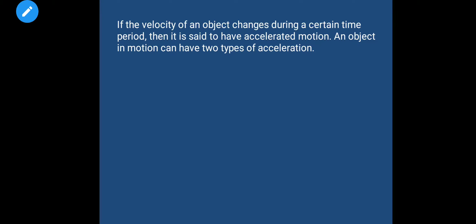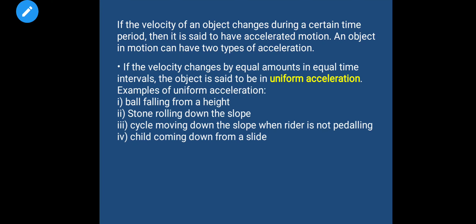If the velocity of an object changes during a certain time period, it is said to have accelerated motion. An object in motion can have two types of acceleration. Number one: if the velocity changes by equal amounts in equal time intervals, the object is said to be in uniform acceleration. Examples: a ball falling from a height, a stone rolling down a slope, a cycle moving down a slope when the rider is not paddling, children coming down a slide.